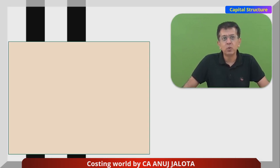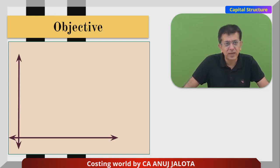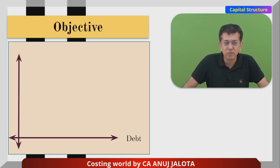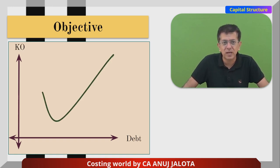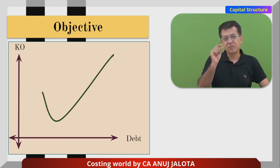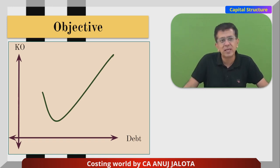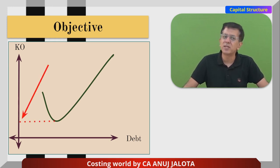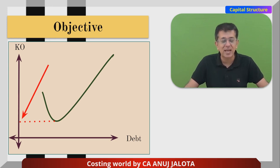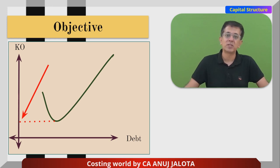If we try to look at the graph, it will be something like this. On the x-axis, we try to have debt. On the y-axis, we try to have KO. If we try to make a graph at different levels of debt showing how much KO is, there will be one point whereby KO will be least. That particular point will be the best point. At this level, if you measure the debt and you measure the equity, we say that debt equity ratio will be the best one.